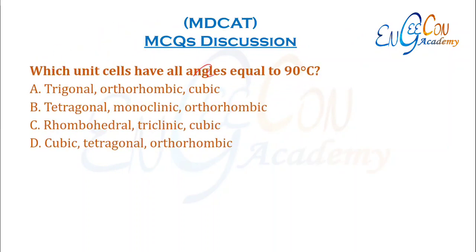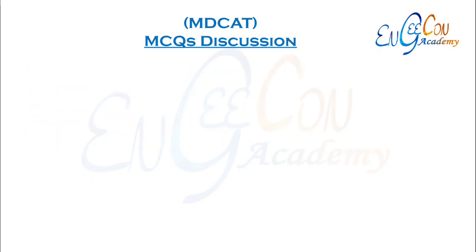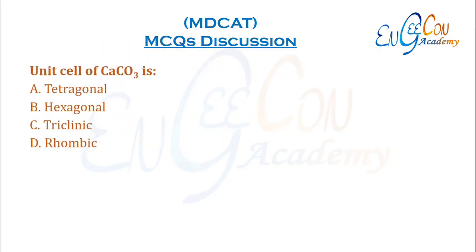Which unit cells have all angles equal to 90°? All angles are equal to 90° in cubic, tetragonal, and orthorhombic unit cells. So D is the correct option. The unit cell of calcium carbonate is orthorhombic (commonly called rhombic), as taken from the textbook table.